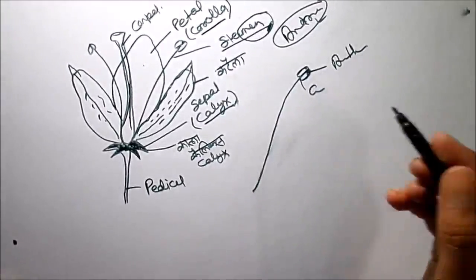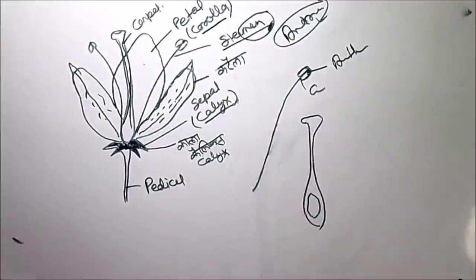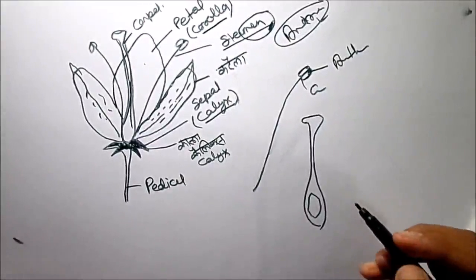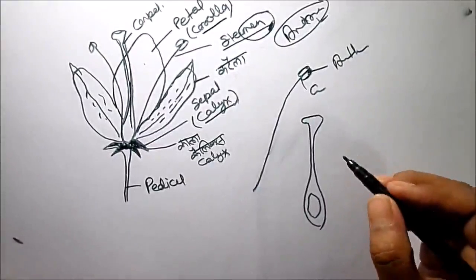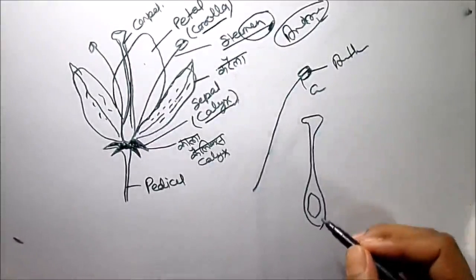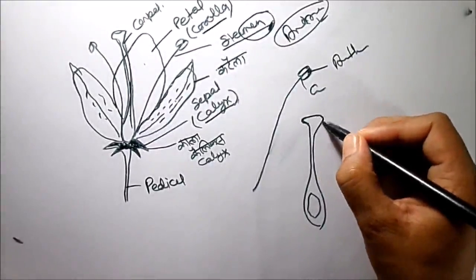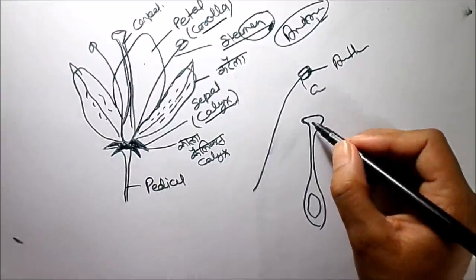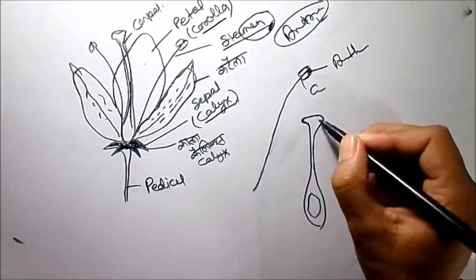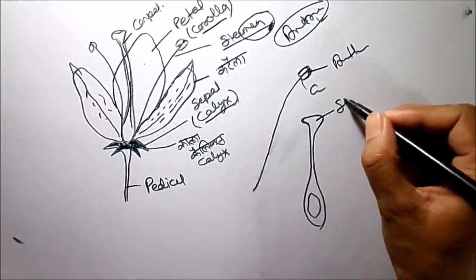Now we will memorize the parts of the female part, that is carpel. There are three parts: the first one is stigma.